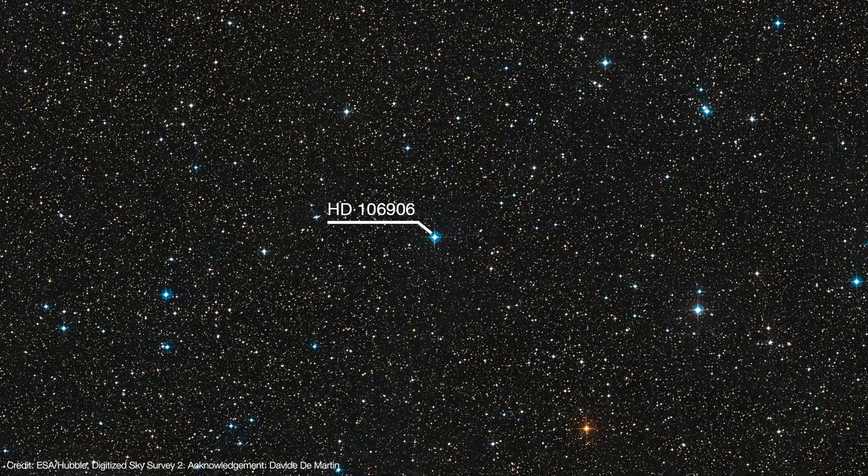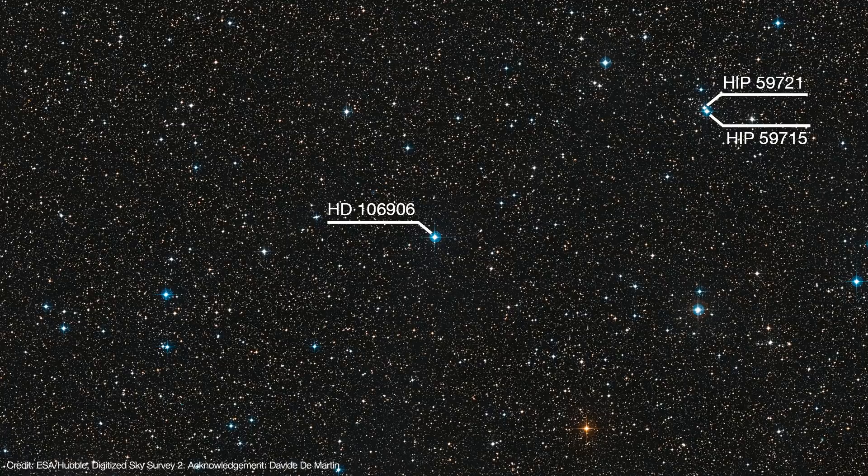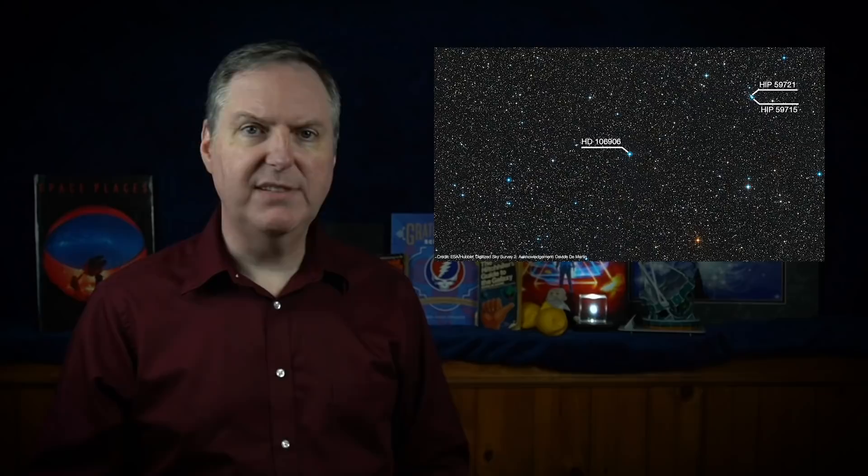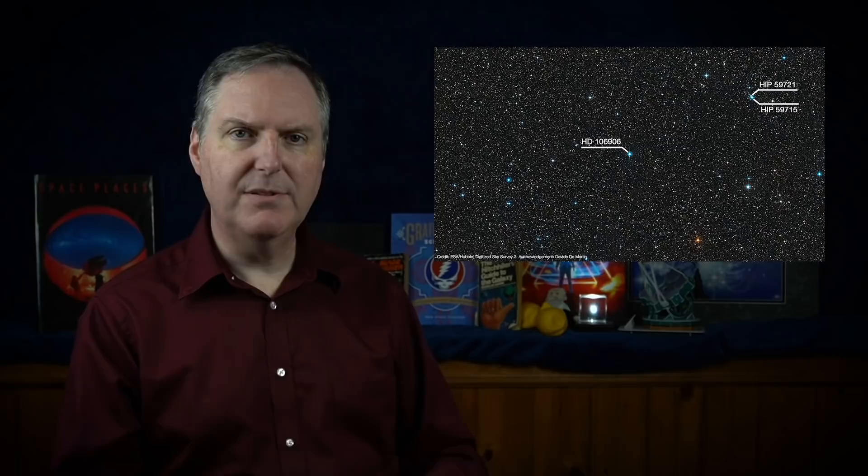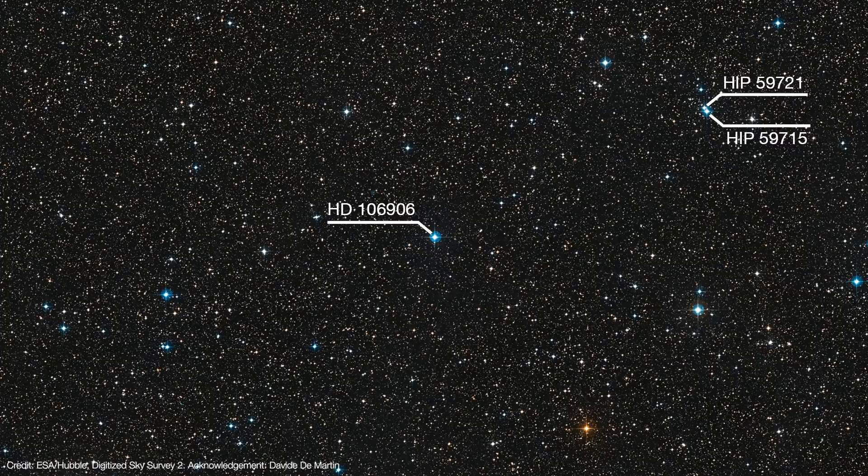As luck would have it, the team identified two possible interlopers. HIP 59715 and HIP 59721 are about 11 parsecs from HD 106906. Their relative velocity suggests an encounter with the binary system would have occurred about two to three million years ago. The stars certainly came to within a parsec of each other, though it's not clear if they came to within the 0.05 parsec needed to stabilize the planet's orbit.